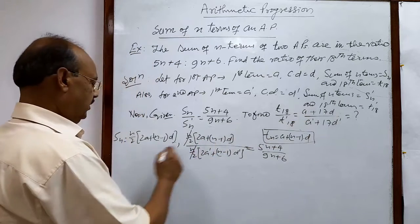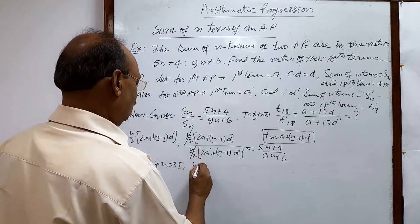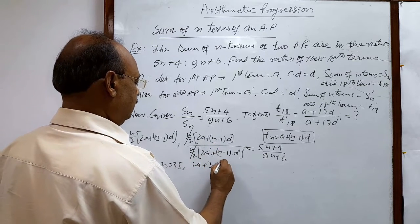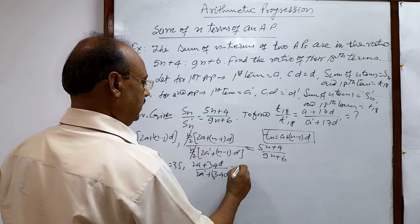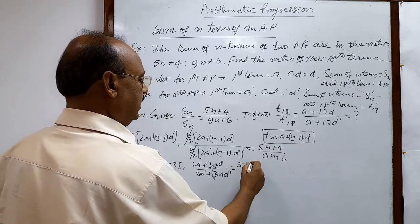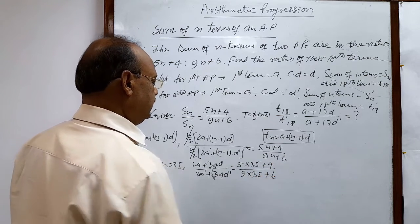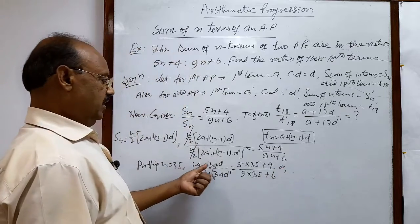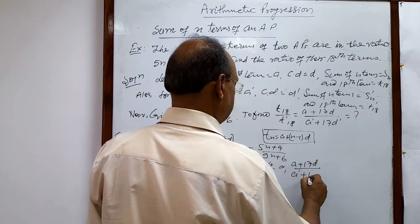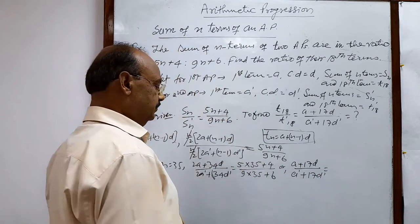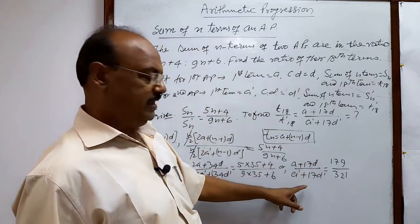Putting n is equal to 35, what we are getting here? Here we are getting 2a plus 35 minus 1 means 34d upon 2a dashed plus 34d dashed is equal to, in this side also we have to put 35: 5 into 35 plus 4 divided by 9 into 35 plus 6. Or if you take 2 common in numerator and numerator, that will be cancelled out. So finally, we will get a plus 17d by a dashed plus 17d dashed is equal to, you simplify it, 179 and 321.